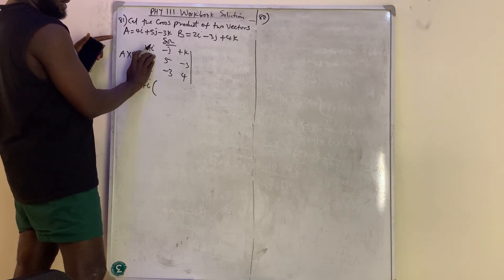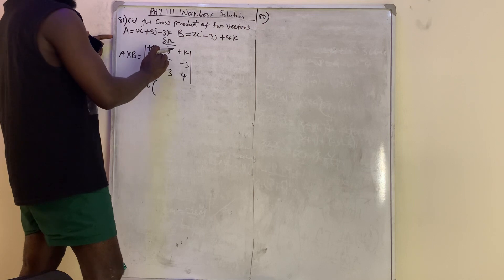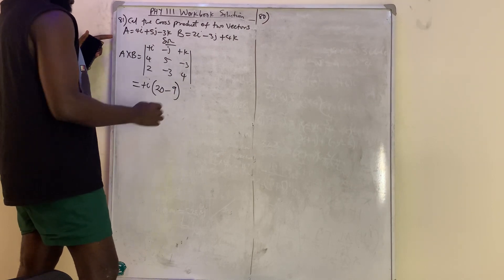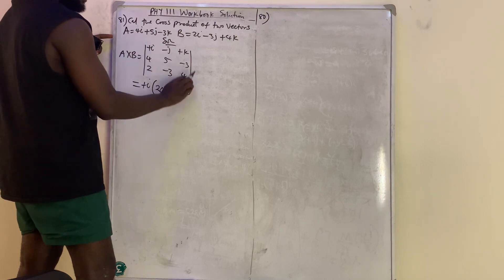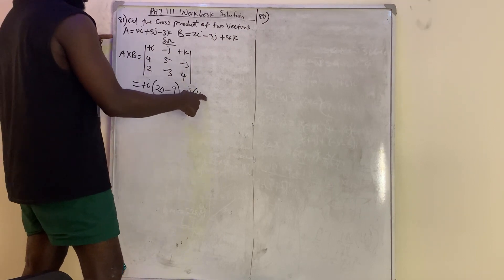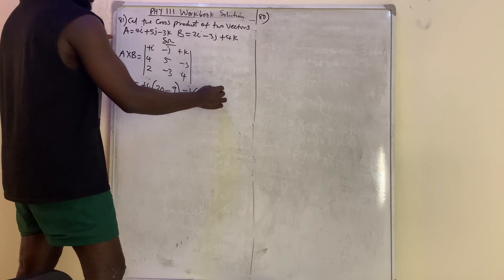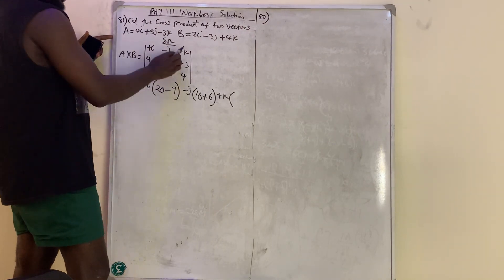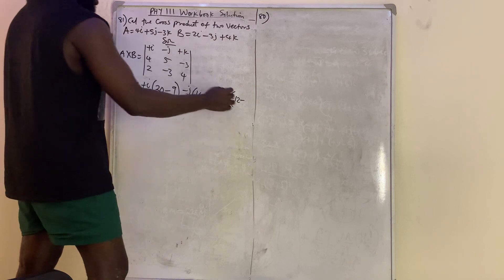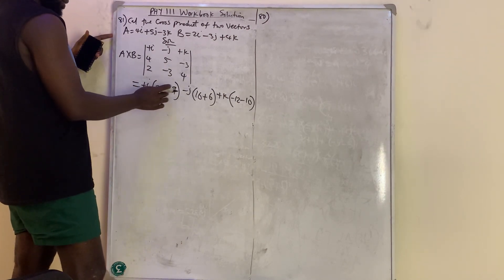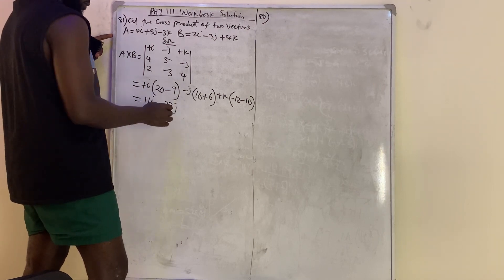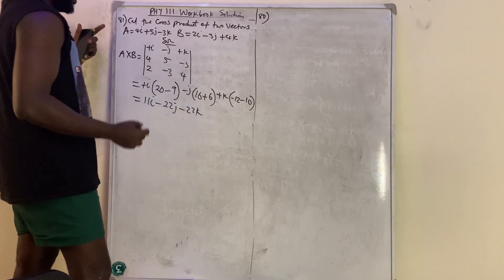So for plus i: cover everything under i and do left minus right — that gives 20 minus 9. Then for minus j: cover that column, do left minus right — that gives 16 minus (minus 6), so 16 plus 6. Then for plus k: cover that column — 4 times 3 is 12, so minus 12 minus 10. My final answer is 11i minus 22j minus 22k.